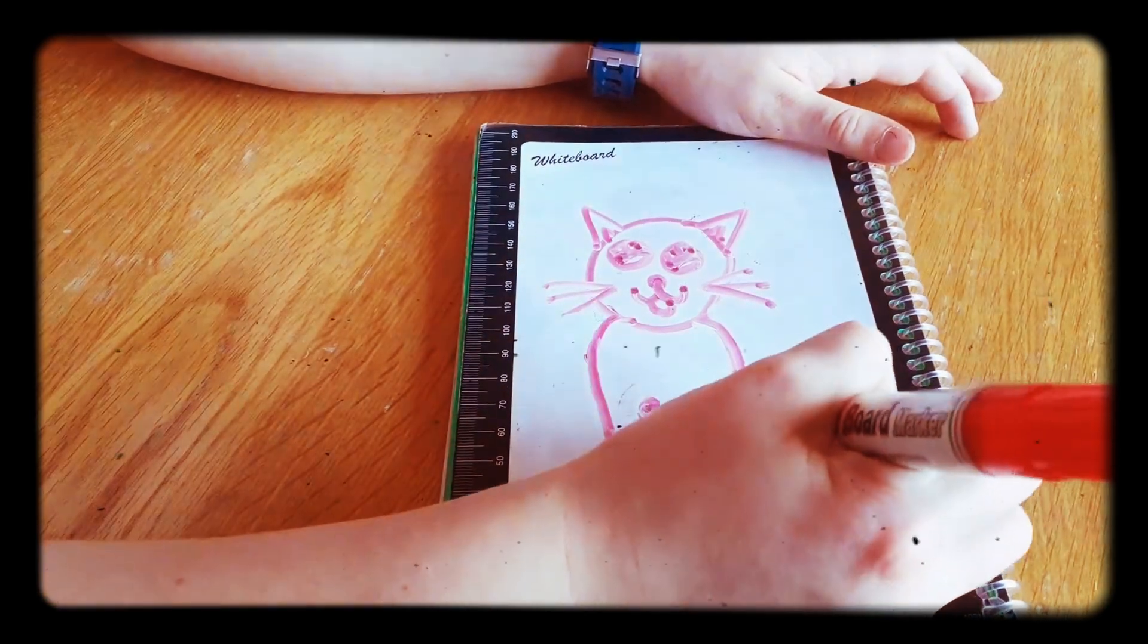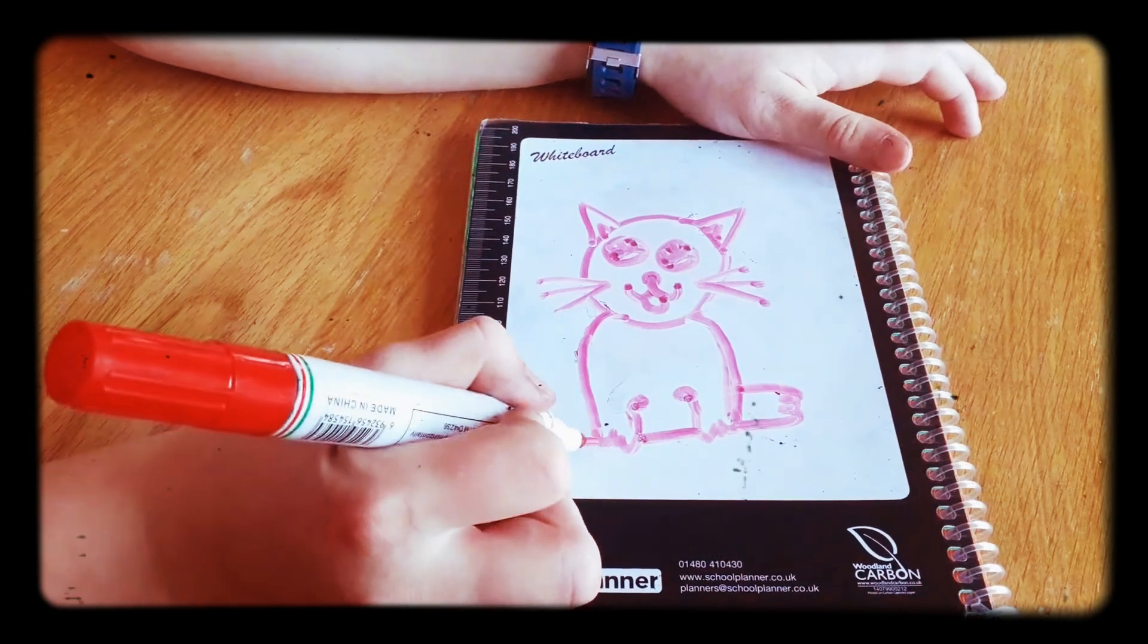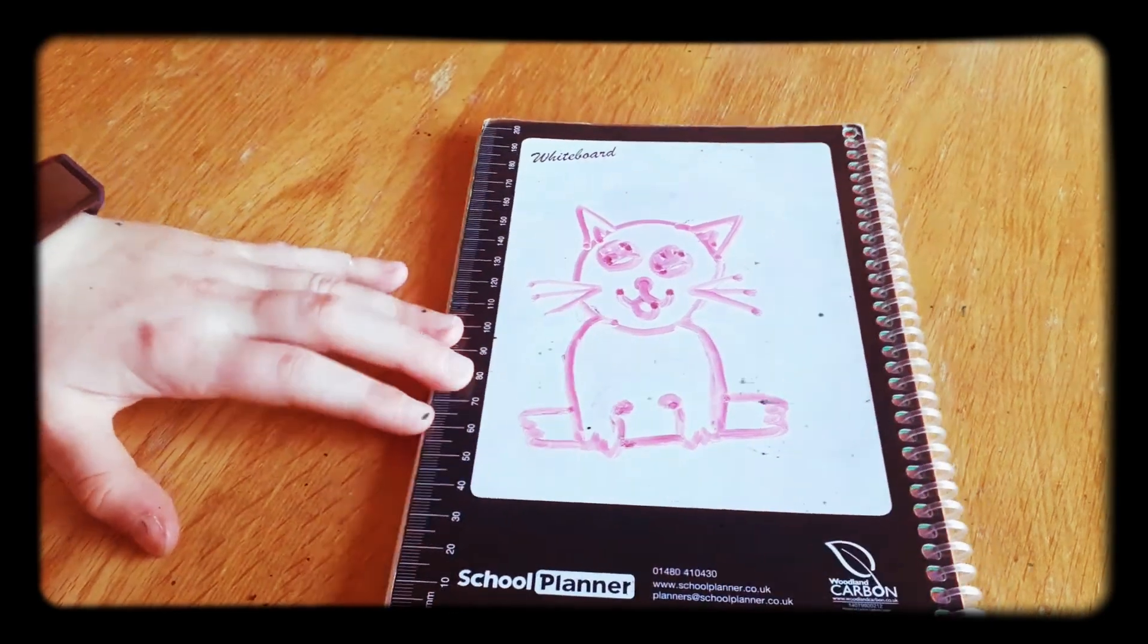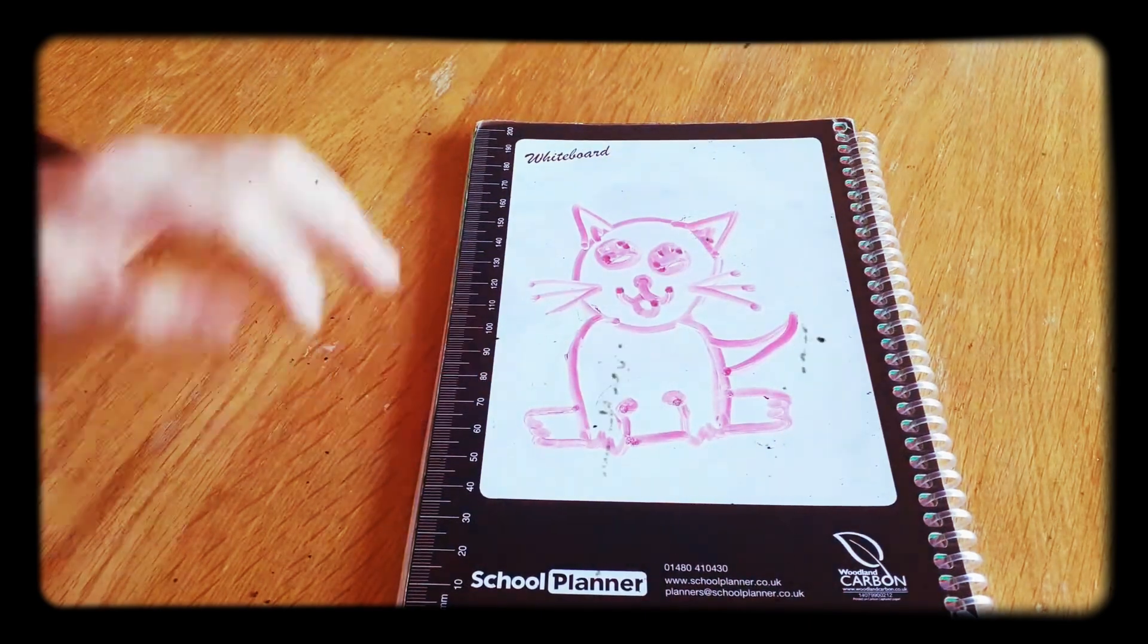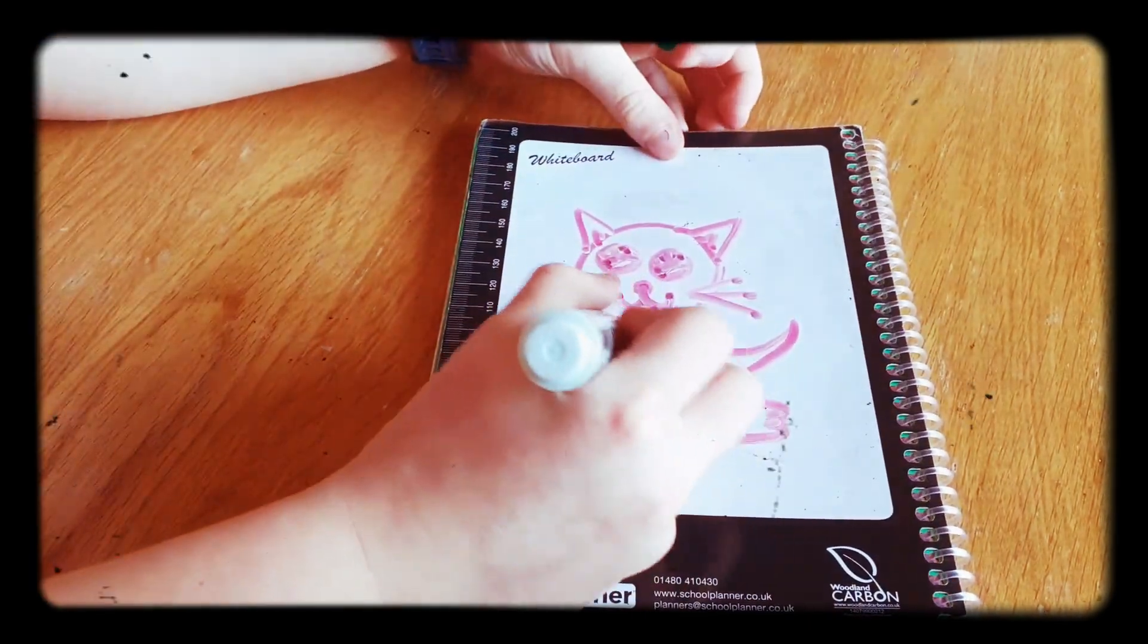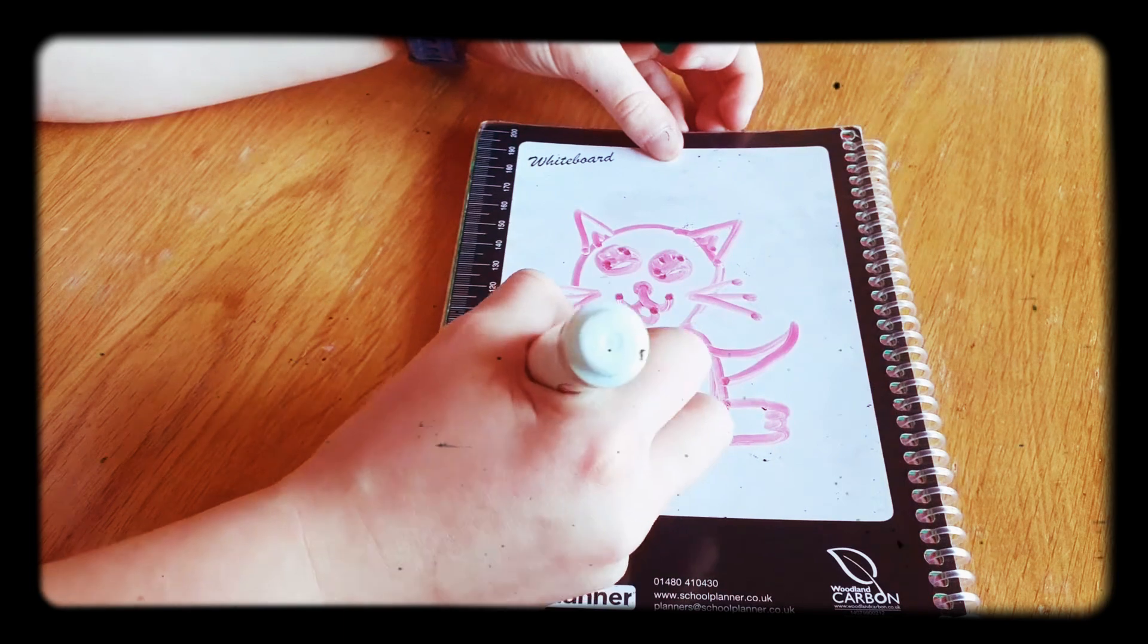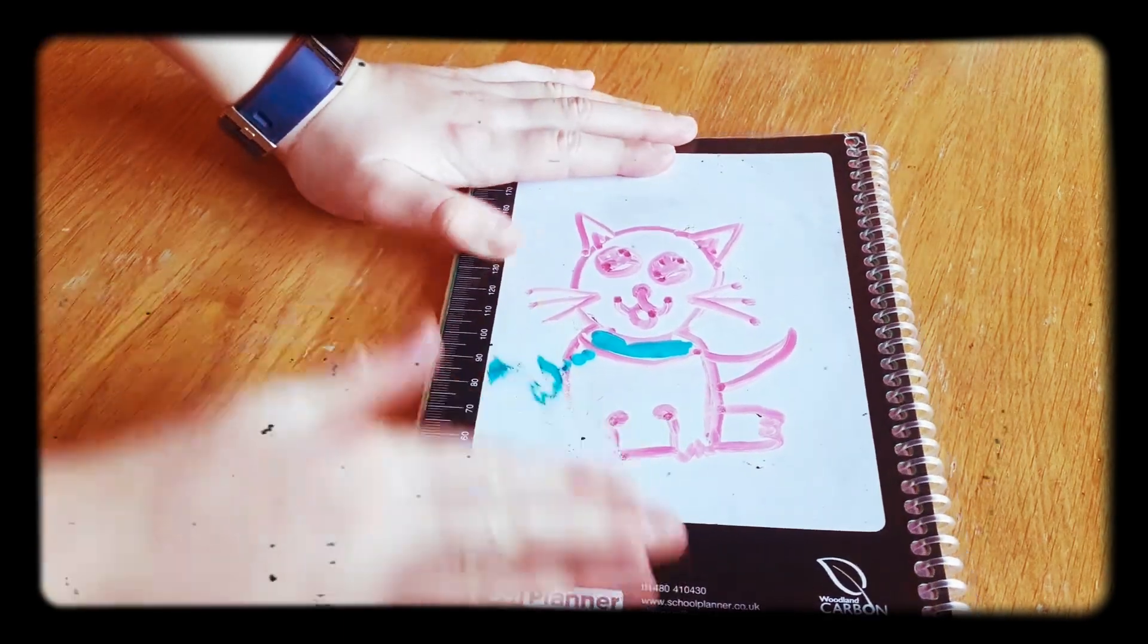Then at the other side you draw the other foot, and make sure that they're in line with this bit and this bit. Then it looks like it's doing the splits. All you have to do is add the tail. Then you can personalize it. Have a green collar this time. And yeah, personalize it. So there we go, that's how to do a cat.